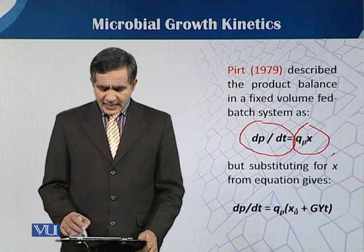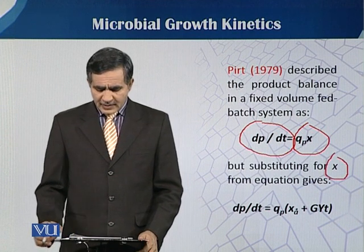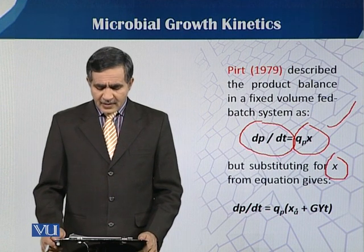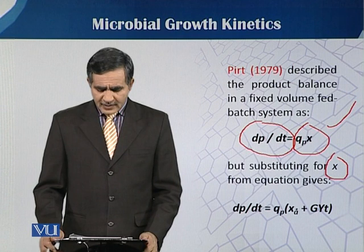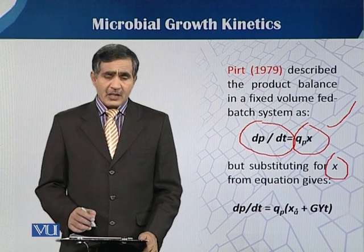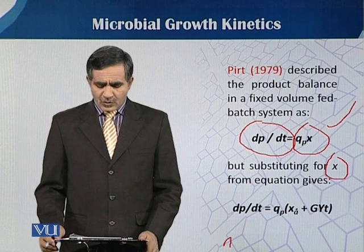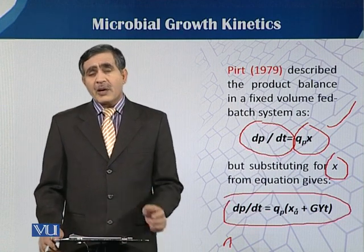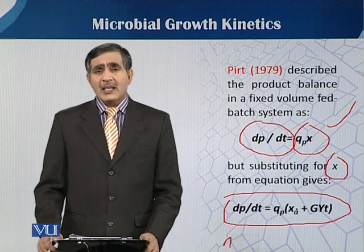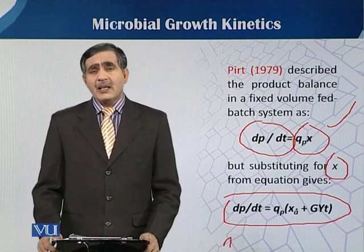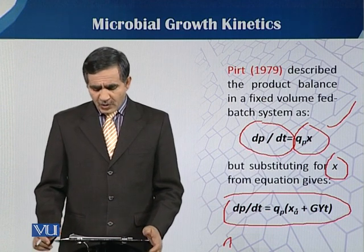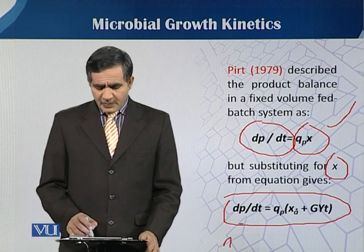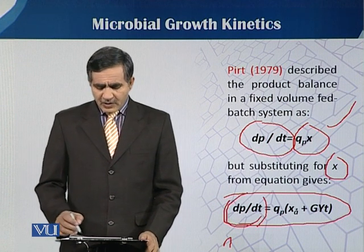By substituting x here, we put dp/dt equal to qp·x into our previous equation in which we have x(t). In the previous module we discussed the equation in which x(t) is equal to x₀ plus g·y into that. So if we put mu equal to dp or specific growth rate terms, we can derive this equation.